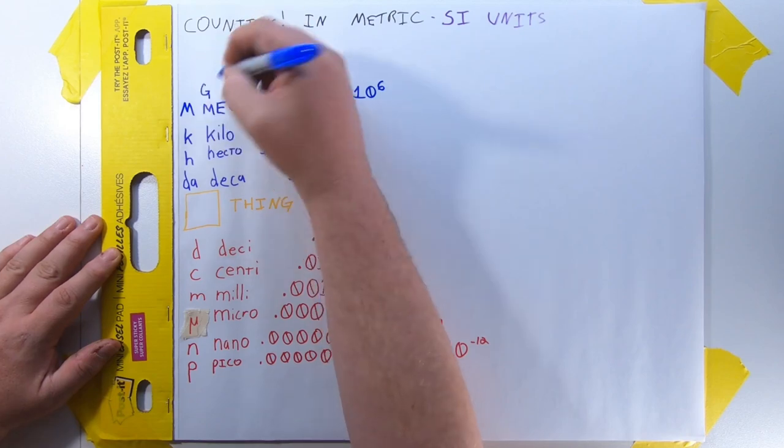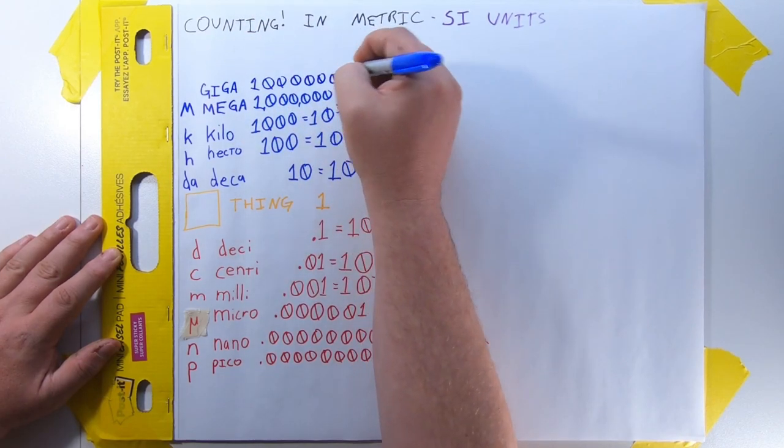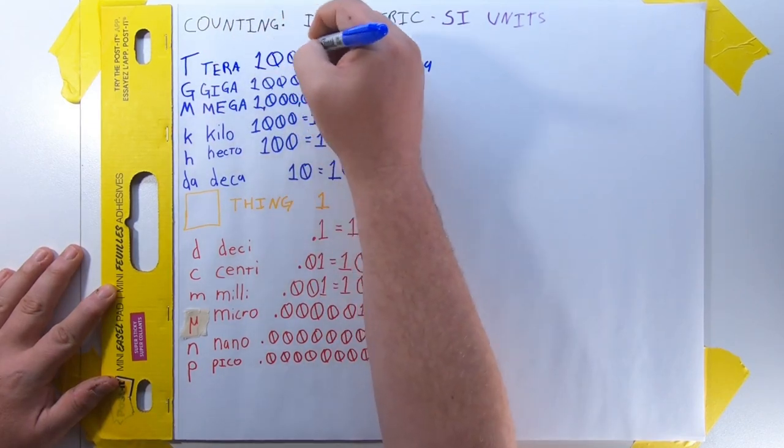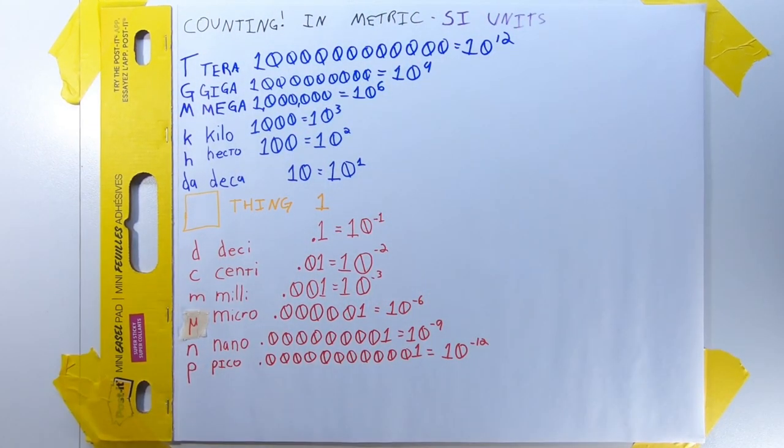If you have a billion things, or 10 to the ninth things, you have a gigathing using capital G. If you have a trillion things, or 10 to the twelfth things, you have a terathing using capital T.